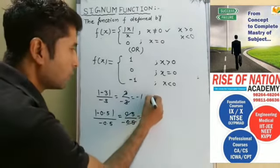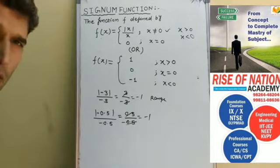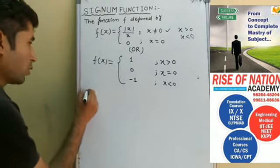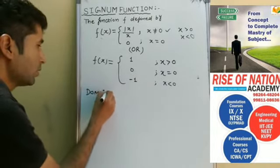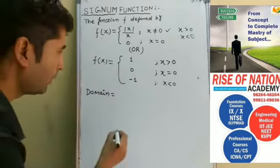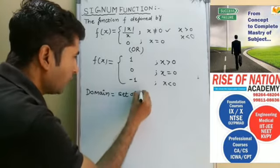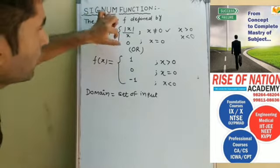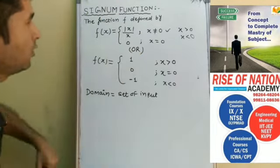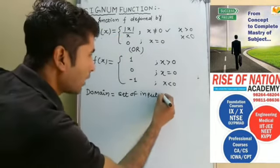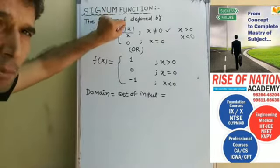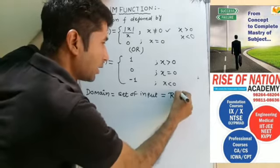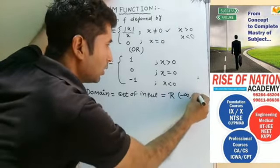The output is called the range. So let's discuss the domain and range of the signum function. The domain is the set of inputs. For this function, we can put all values of x belonging to ℝ. So the domain of the signum function is ℝ, that means minus infinity to plus infinity.